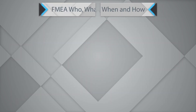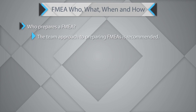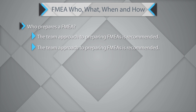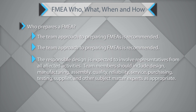Now let's try and understand the who, what, when, and how of FMEA. Who prepares a FMEA? FMEA is a team approach — a team approach to preparing a FMEA is always recommended. The responsible system or product lead leads the FMEA team and is expected to involve representatives from all affected activities. Team members should include design, manufacturing, assembly, quality, reliability, service, purchasing, testing, suppliers, and other subject matter experts as appropriate.